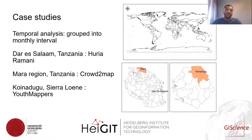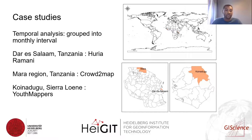We tested our filters using three case studies. The first is Dar es Salaam, an urban area in Tanzania, where most mapping activities have been done by the Huraromani groups, which focus on flood resilience activities. We also selected the Mara region in Tanzania, where a lot of work has been done by Crowd2Map, who map to support prevention of female genital mutilation. We also added a region in Tanzania which is a rural area where there has been a lot of work done by youth mappers.